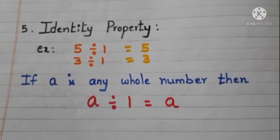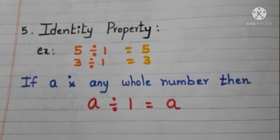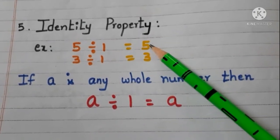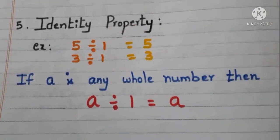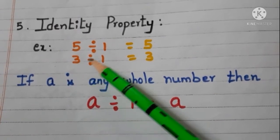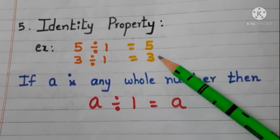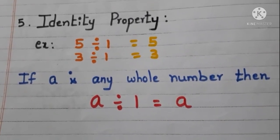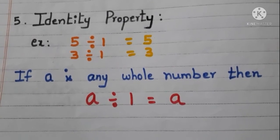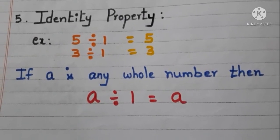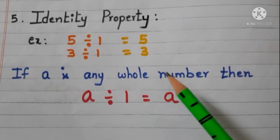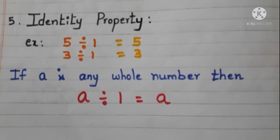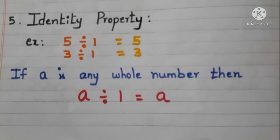Now identity property. Let us see with an example. Take the whole number 5 and divide with 1 — the quotient is that whole number itself. Now take another whole number 3 and divide with 1 — the quotient is that whole number itself. When we divide a whole number with 1 we get the quotient as that whole number itself. If a is any whole number, then a divided by 1 is equal to a. So 1 is called the division identity.